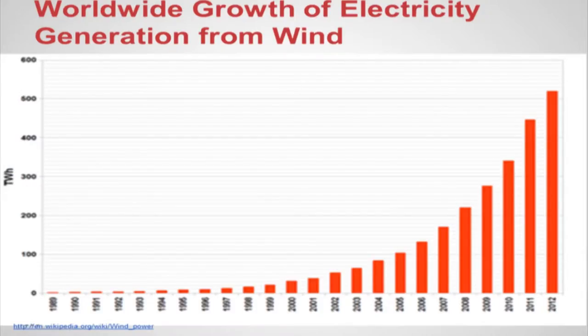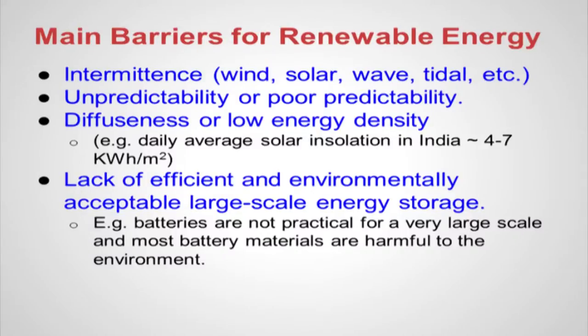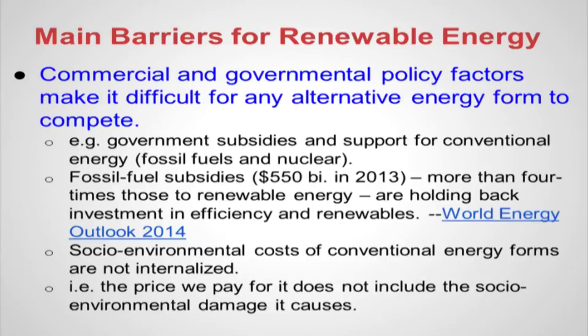Wind energy generation is also increasing very rapidly like solar. But there are common problems for wind, solar, and other renewables: intermittence and the ability to integrate with the grid require some kind of storage. Market factors are also causing trouble — subsidies given on competitive technologies are much higher versus subsidies given on renewables. In some states, subsidies on solar were announced but there was no way to actually claim them — people went from pillar to post with no success. Apparently now things have started moving.